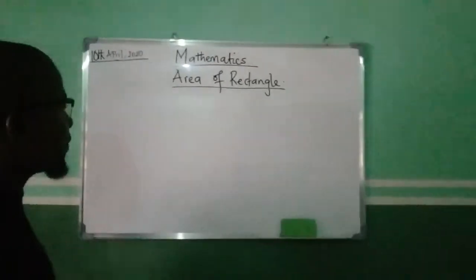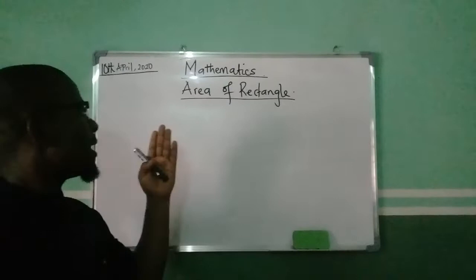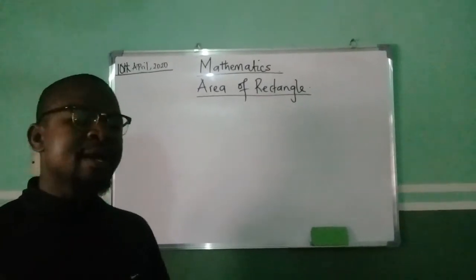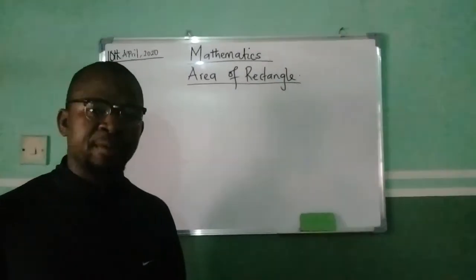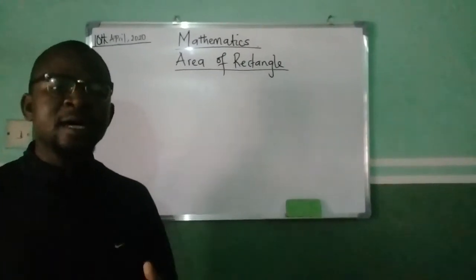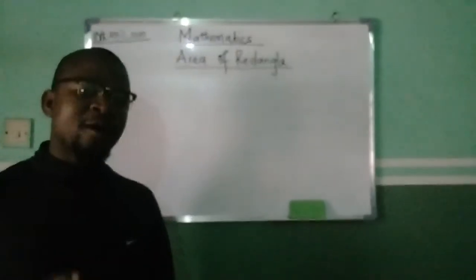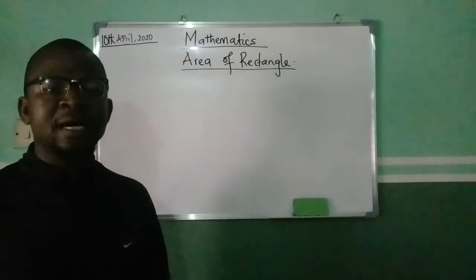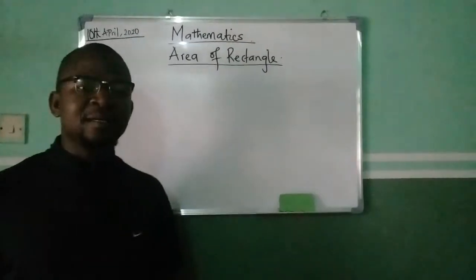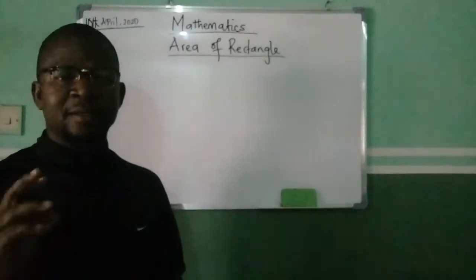It's important for us to know the meaning of area before we look at how to find the area of a rectangle. The area of a shape is simply a measure of its surface. The area of a rectangle is a measure of the surface of the rectangle.